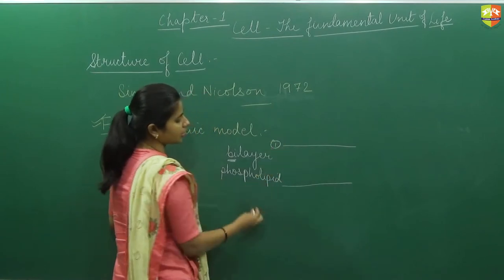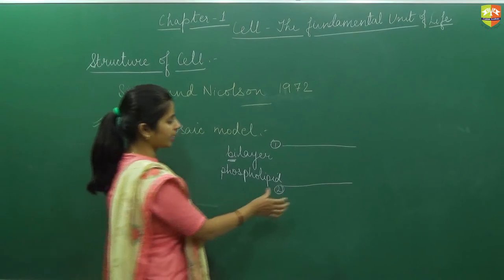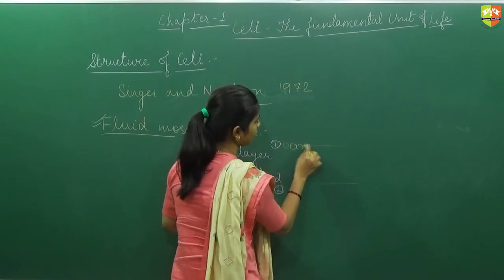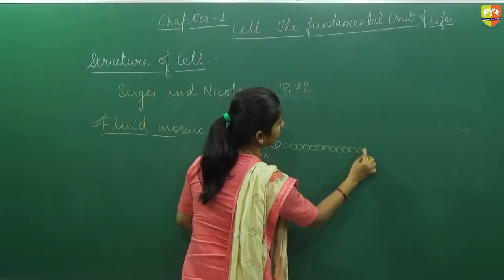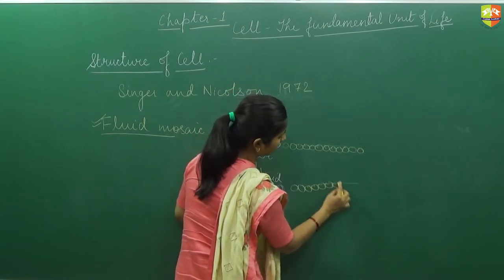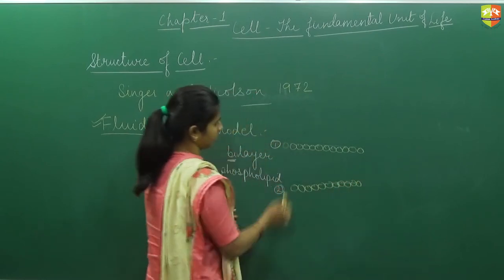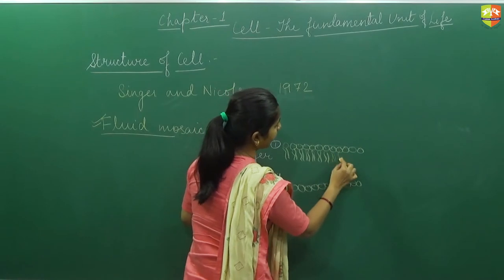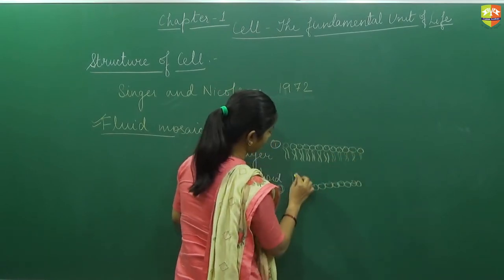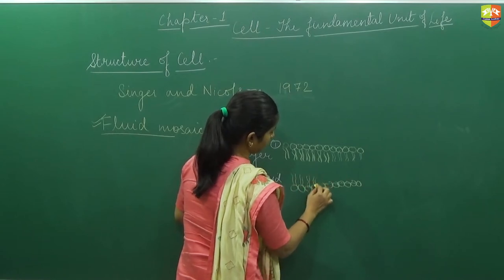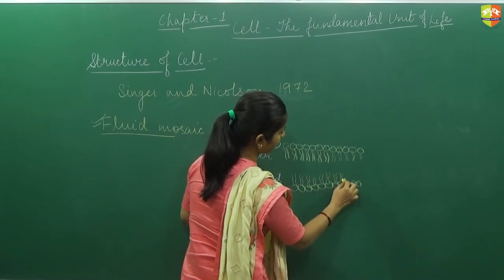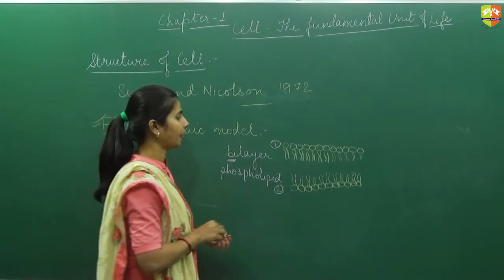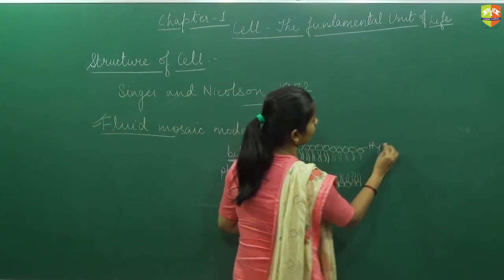There is one first layer and another second layer. To understand this diagram clearly, I will draw it. It is a circular structure of lipids arranged in a straight way. Since it is a bilayer, there are two layers of lipids. Each lipid has a structure with one head and one tail — the head is at the outer part and the tail is inside the inner part. The outer layer is hydrophilic.